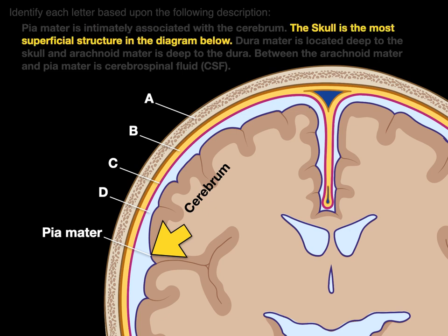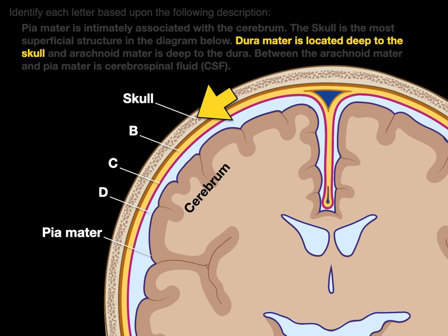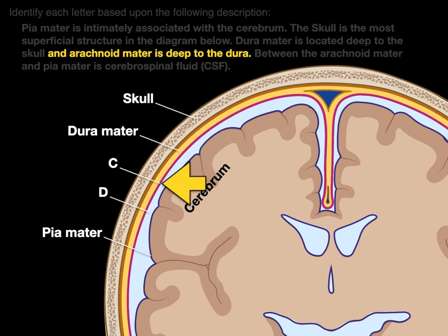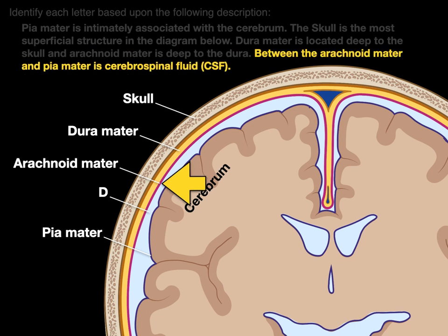The skull is the most superficial structure in the diagram. So there's the skull — it's the most superficial thing. The dura mater is located deep to the skull, so we go deep to the skull — dura mater. And the arachnoid mater is deep to the dura, so we go deep to the dura — that is arachnoid mater. And between the arachnoid and pia mater is cerebrospinal fluid — we go between the two — that's cerebrospinal fluid.